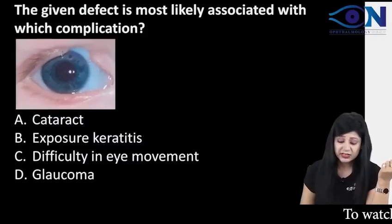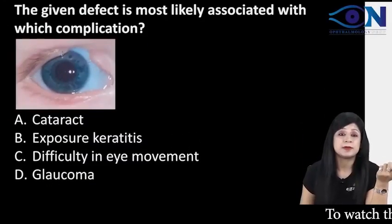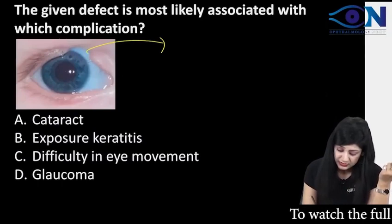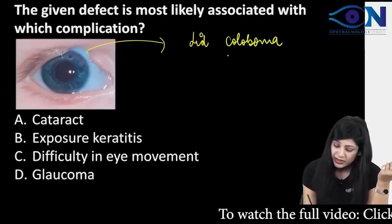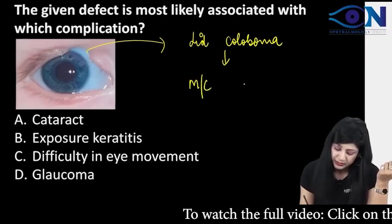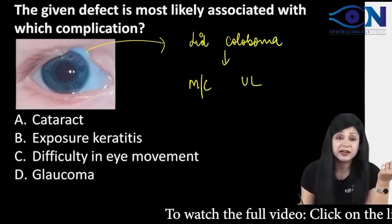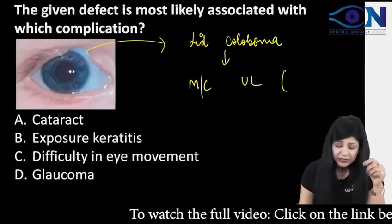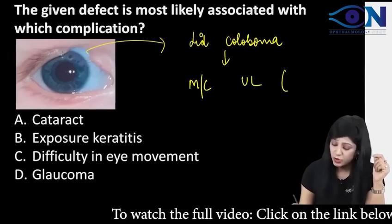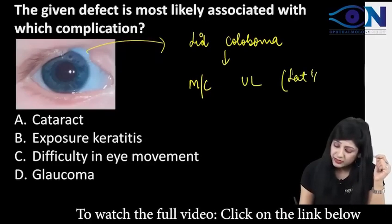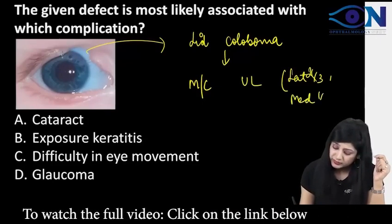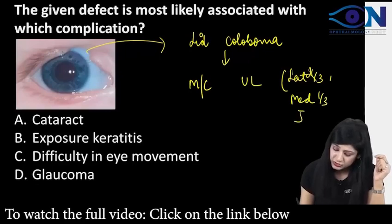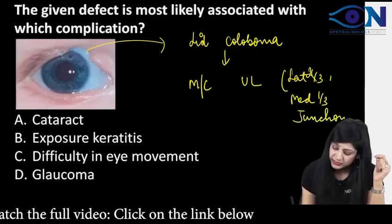The given defect is associated with which complication? This is a lid coloboma. Lid coloboma is most common in the upper lid, and it is common at the lateral two-third and medial one-third junction. This is the most common site.